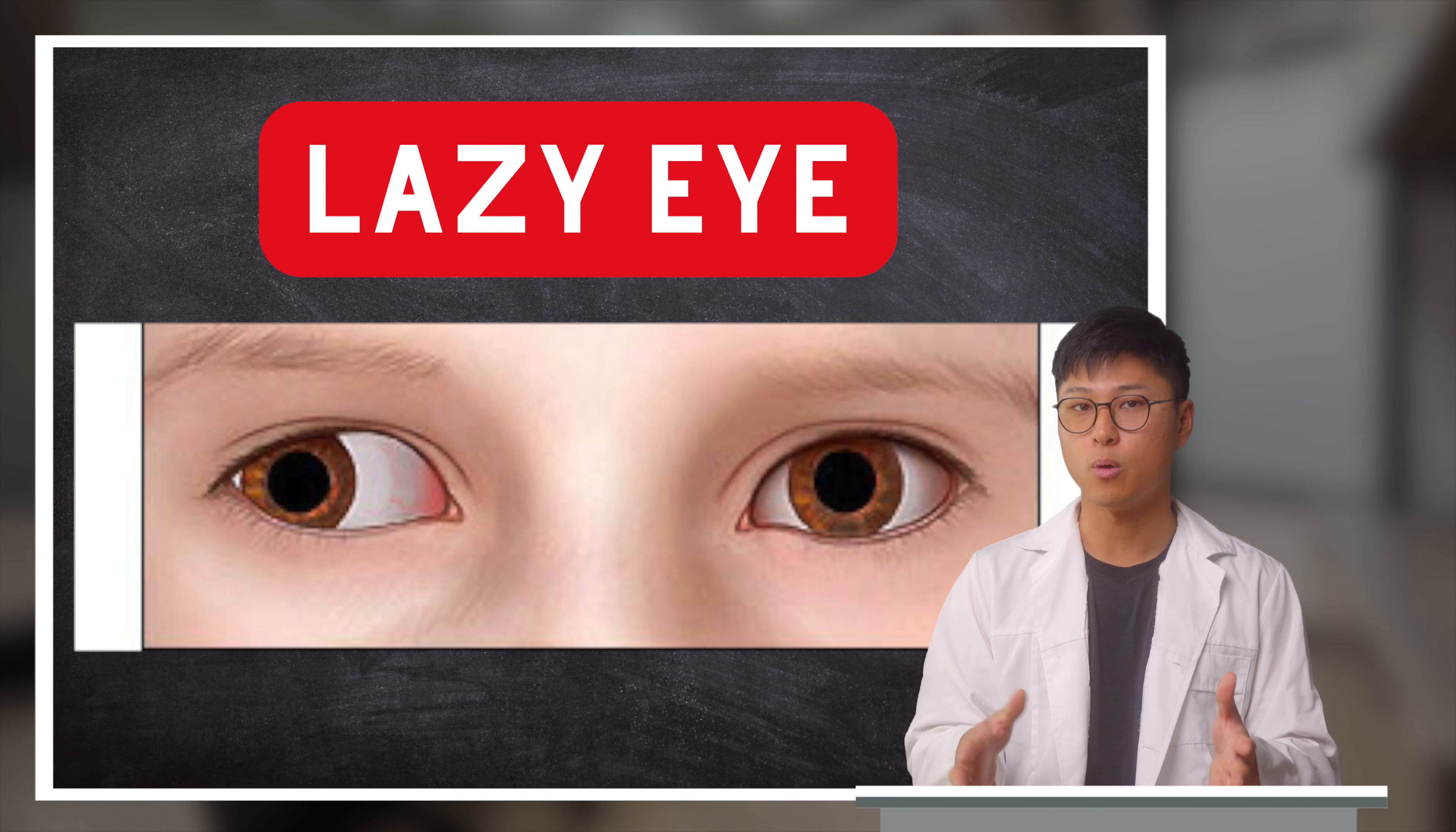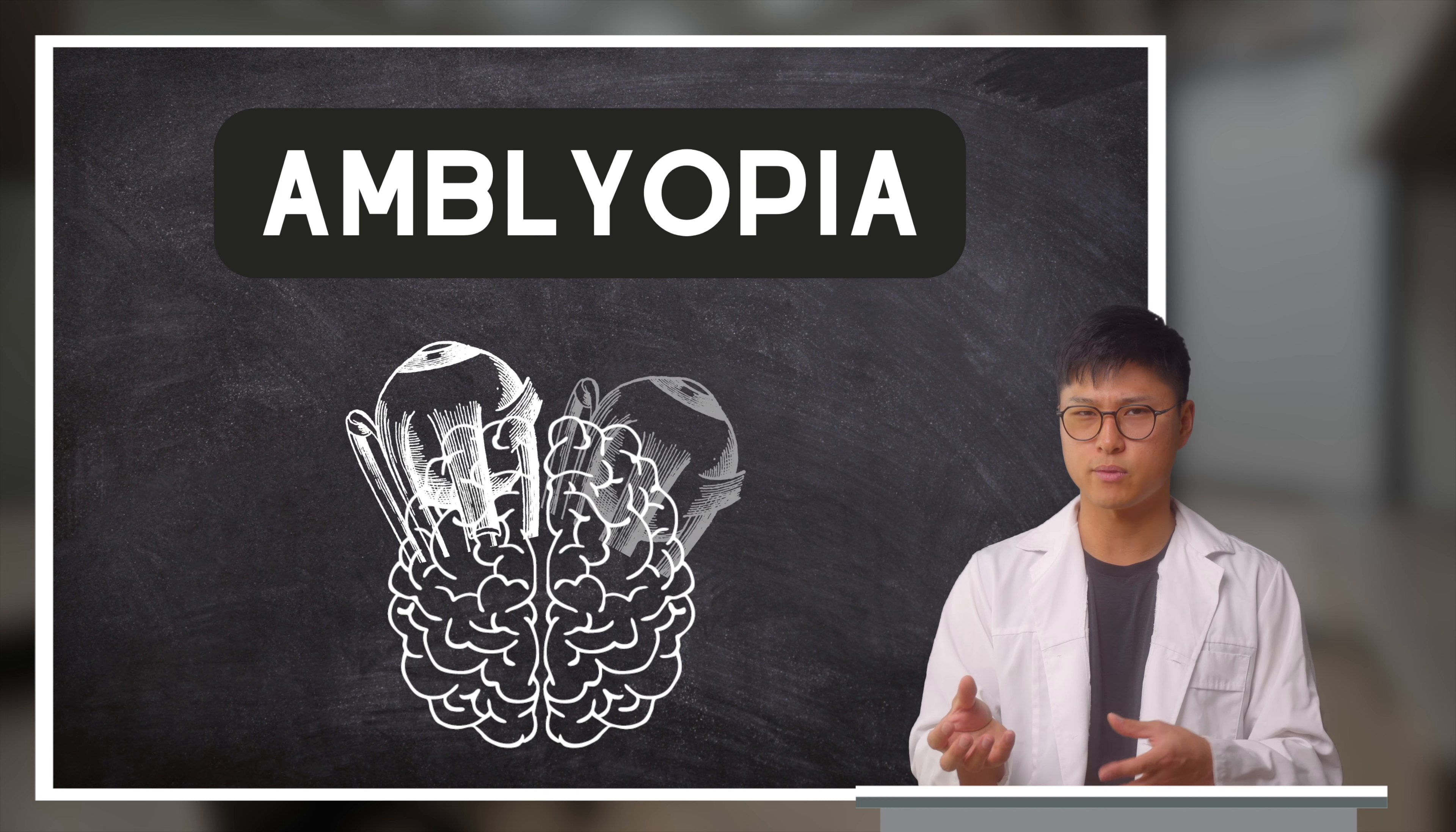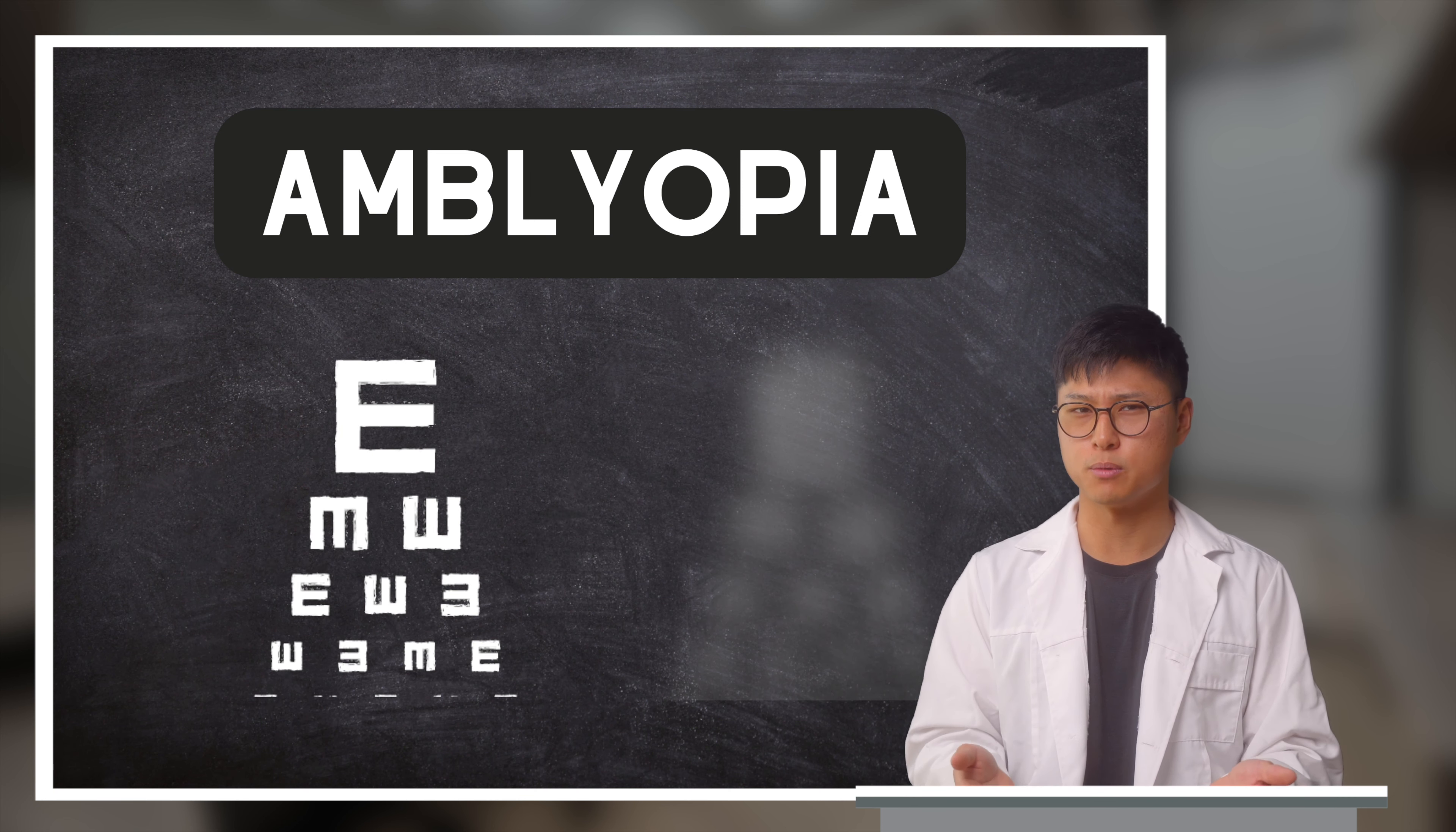A lazy eye, also known as amblyopia, is a condition where one eye doesn't develop as extensively as the other, leading to reduced vision and poor depth perception. This happens when the brain fails to form essential connections via the optic nerve and it leads to weaker signals being sent to the brain. If the signals are unusable, then the brain will resort to ignoring them.